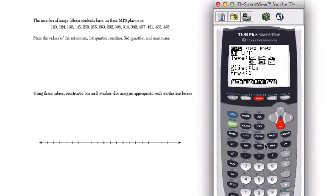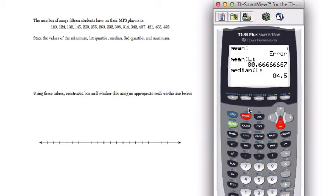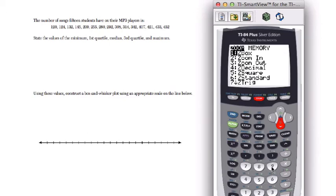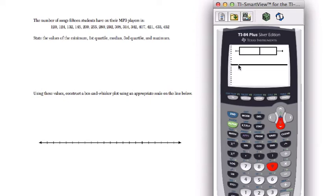On zoom, it's the ninth command for stats. Although I have to quit this, sorry. So zoom, nine, zoom stat. And you'll get your box and whisker plot.